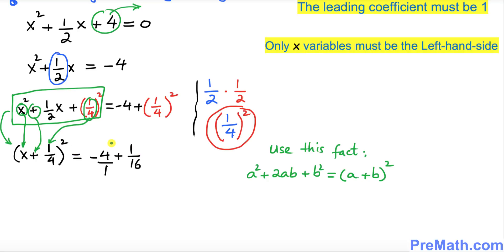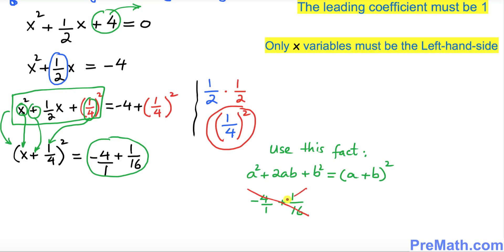Now we are going to add these two fractions. We simplify by cross multiplying. Multiplying negative 4 times 16 gives negative 64, then with the plus sign, 1 times 1 is 1, divided by the denominators multiplied together: 1 times 16 is 16.